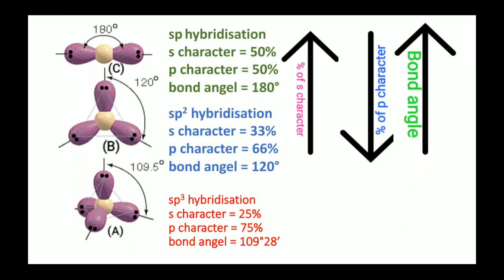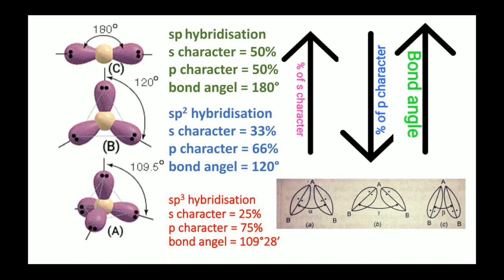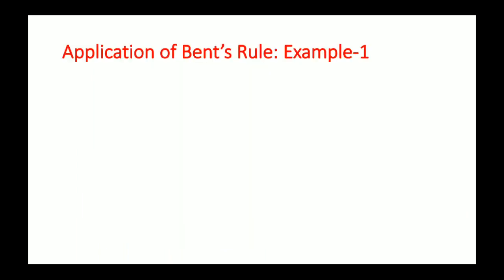Why is this? When the central atom uses S orbital for hybridization, the bond pair electrons are closer to its nucleus because the S orbital feels more effective nuclear charge, and hence the two bonds feel more repulsion. In picture B, where S character in the hybridized orbital is more, the bond angle increases. In picture C, where S character is less, the bonding electron pairs are farther from the central atom, repulsion between the two bonds is less, and the angle is smaller. Therefore, higher the S character, higher will be the bond angle.